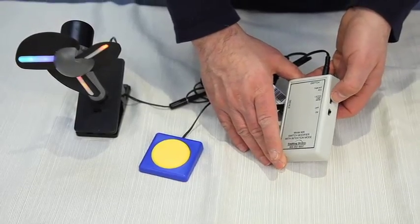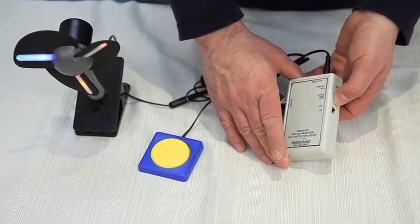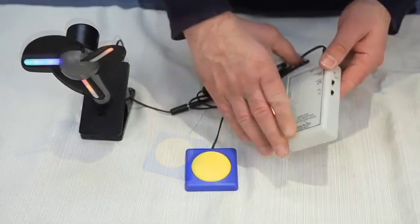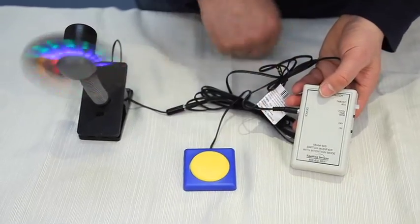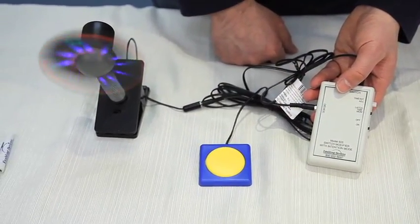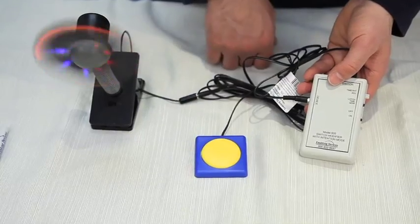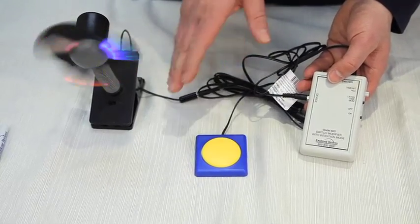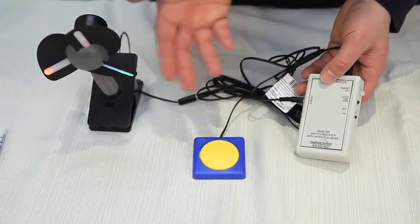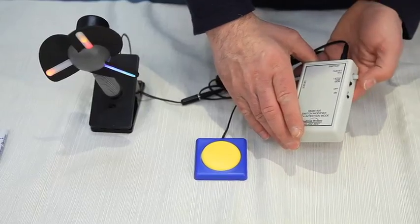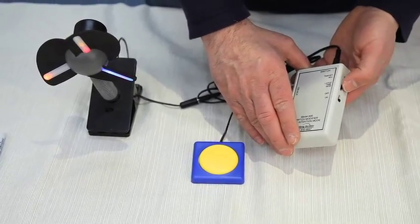The latch mode basically works like a light switch. Turn the unit on. One switch activation starts the device. It keeps running continuous. Hit the switch again it shuts it off. Now this is great for radios or could be great for fans or some other devices.